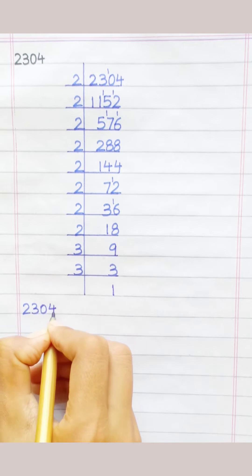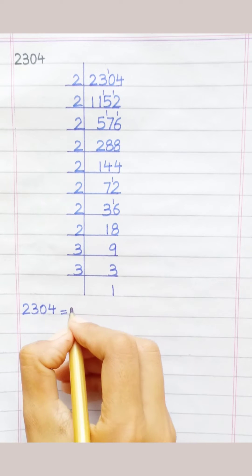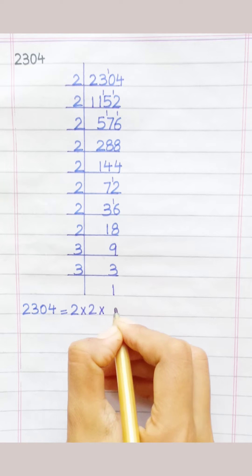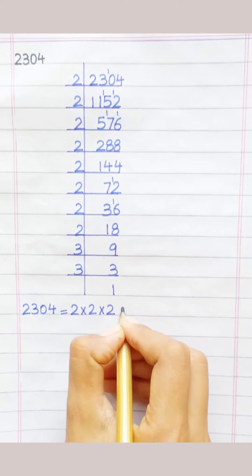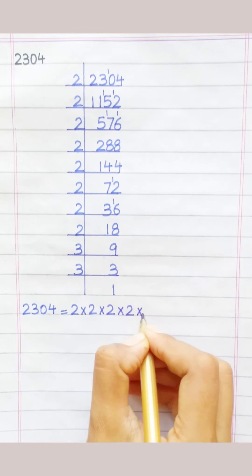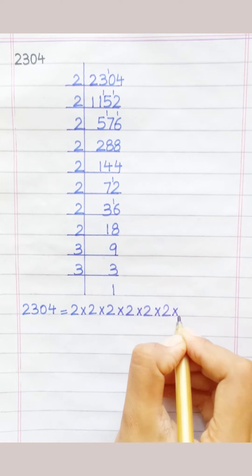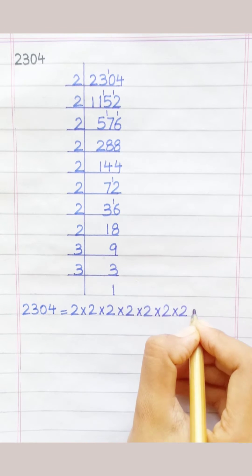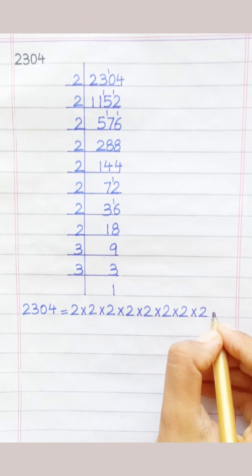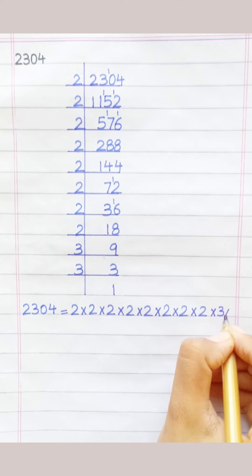2304 equals 2 × 2 × 2 × 2 × 2 × 2 × 2 × 2 × 3 × 3.